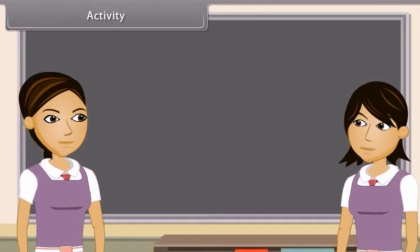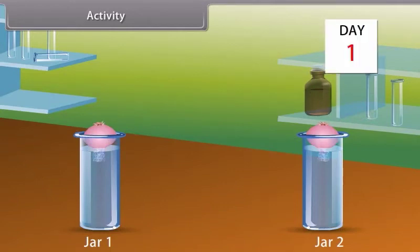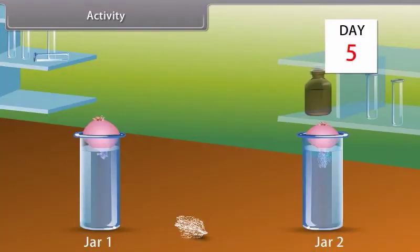We can prove that meristematic tissues are found in specific regions by doing an activity. Take glass jars filled with water, then place same sized onion bulbs on each jar for three days to observe the growth of roots. Measure length of roots on day 1, 2 and 3. Then on the fourth day, cut roots of onion bulb and place it on the jar again. On the fifth day, measure the root length again. We find that the growth of roots has stopped. This activity proves that growth of plants occurs only in certain specific regions because the dividing tissue, also known as meristematic tissue, is located only at these points.